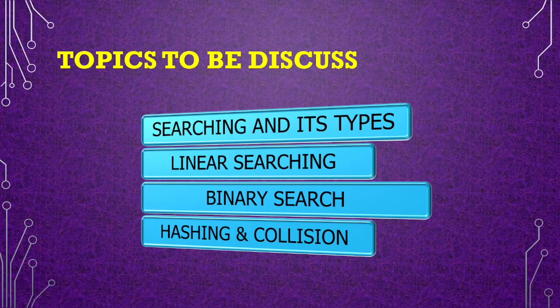What are the topics to be discussed? There are searching and its types, and what is the meaning of linear searching. For linear searching, we are going to learn the algorithm, tracing, and the lab program. For binary search also, we are going to learn what it means, the working process which is tracing, algorithm, and lab program. And we are also having hashing and collision technique.